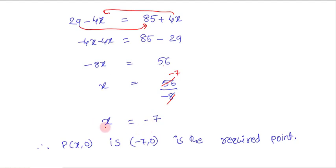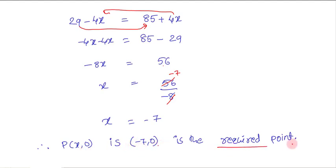On simplifying, x equals minus 7. So our required point P(x, 0) is (-7, 0).